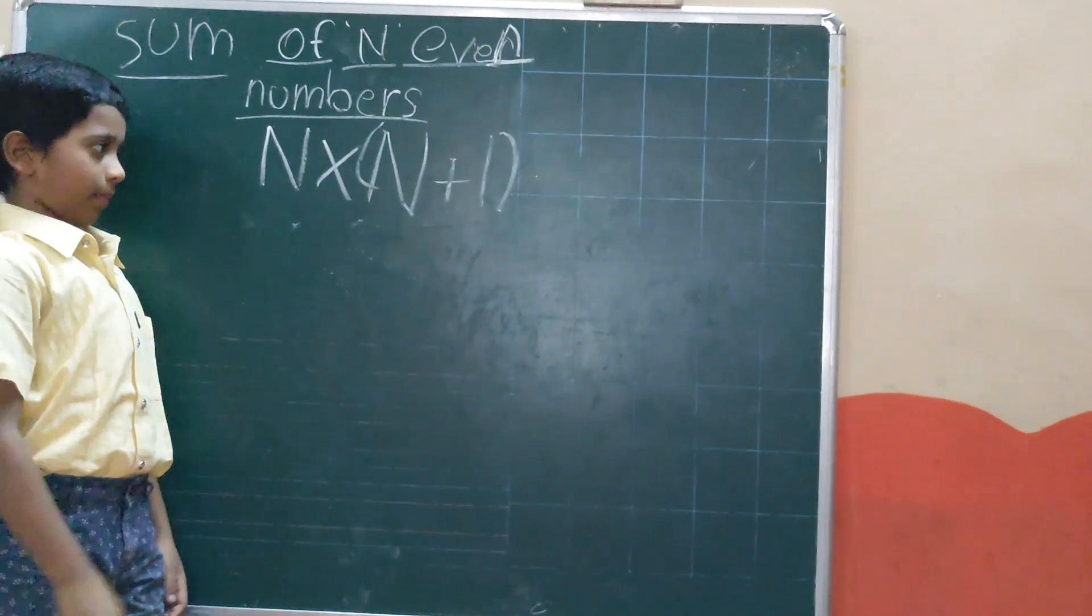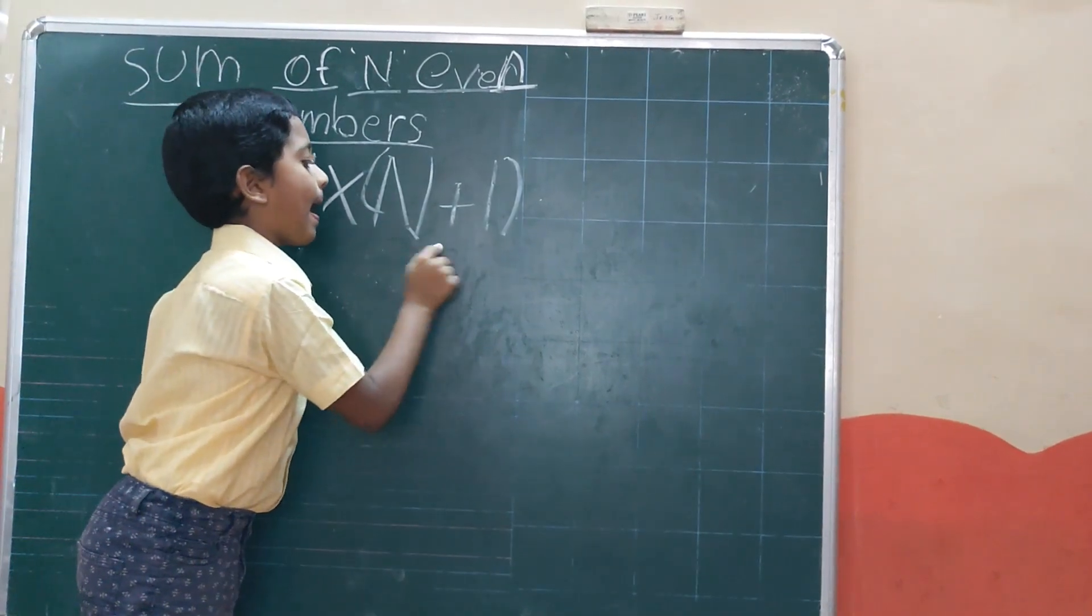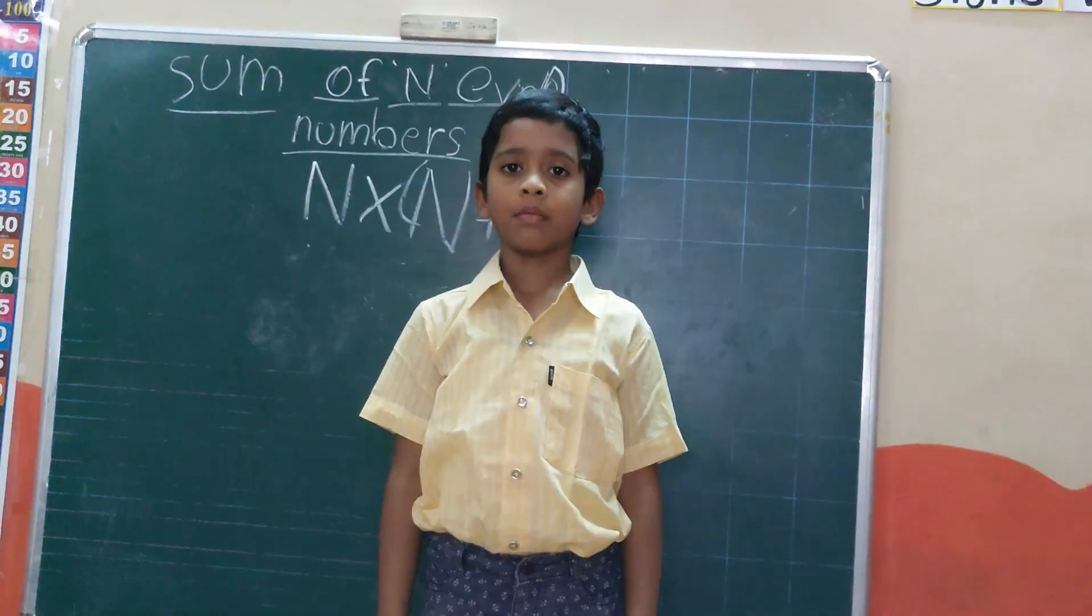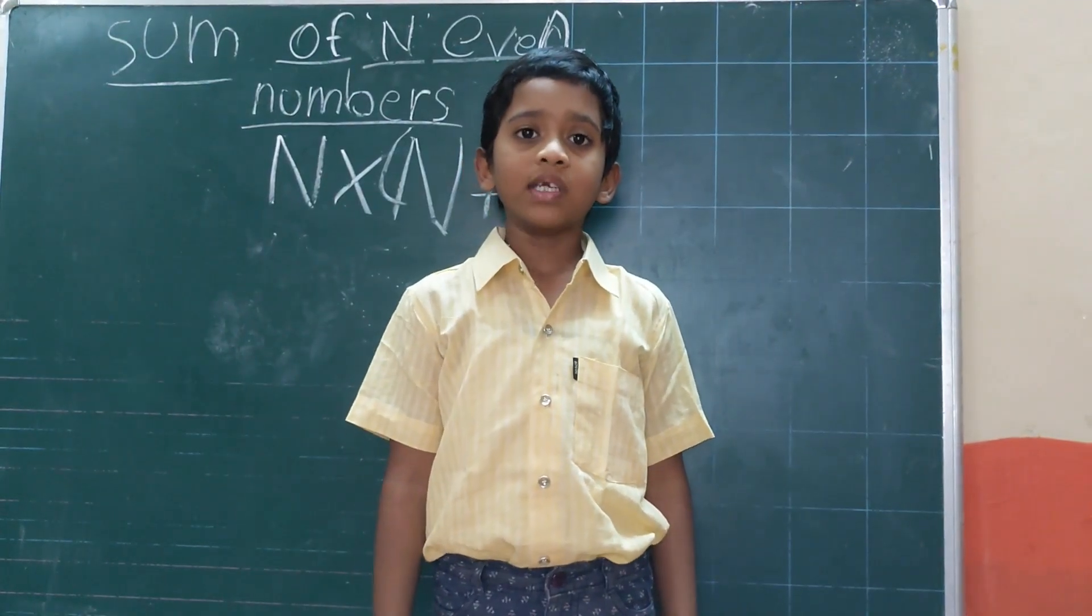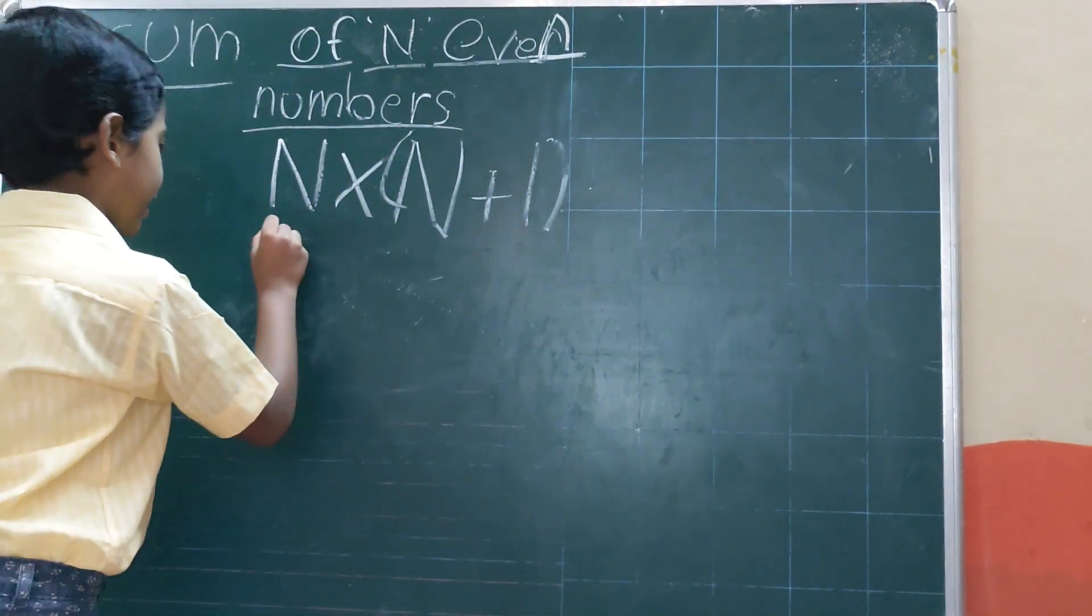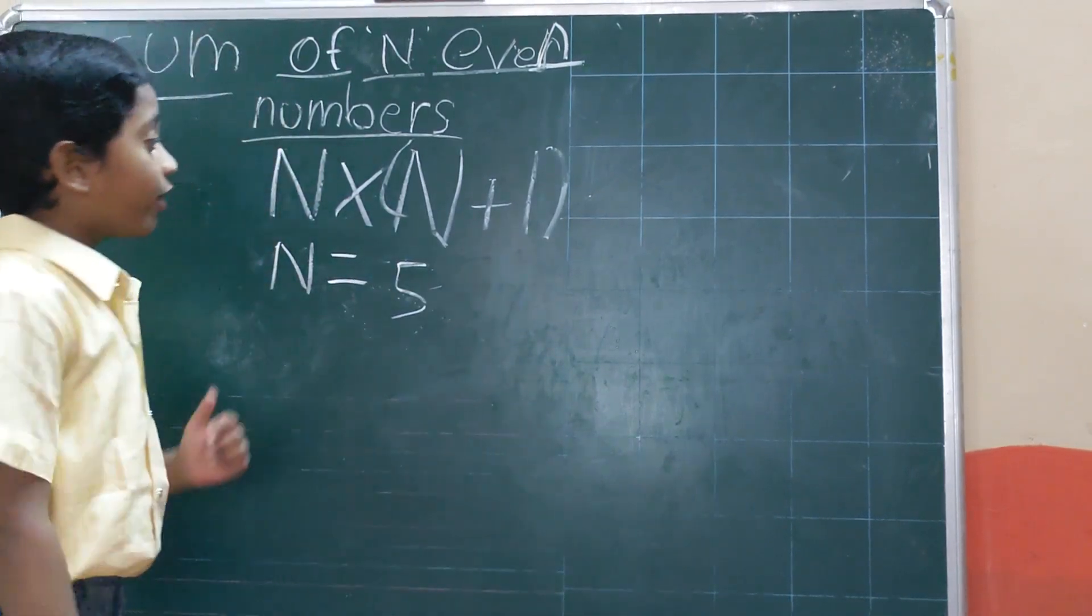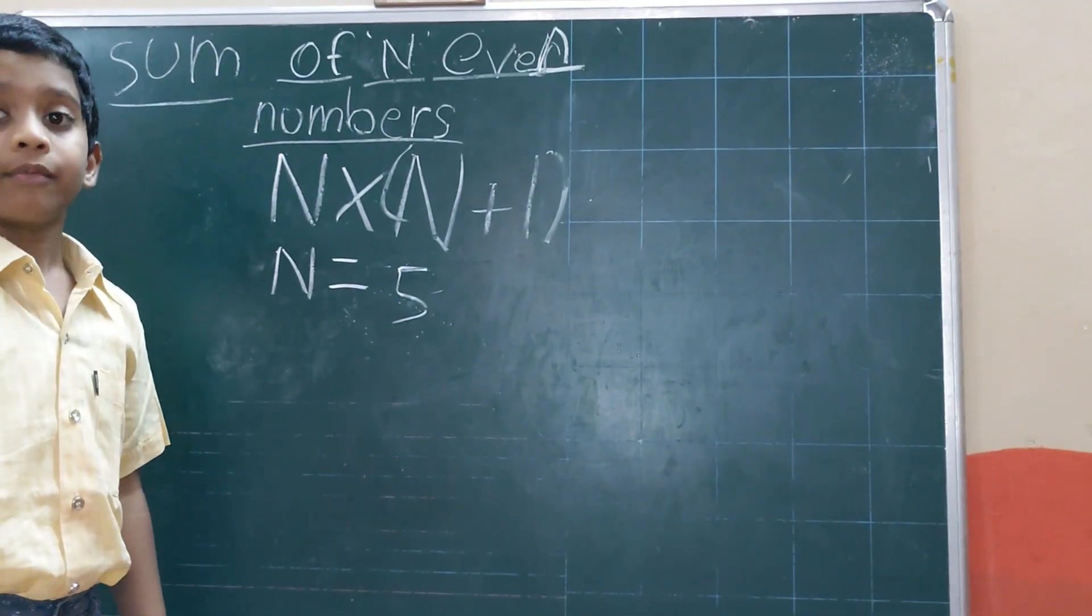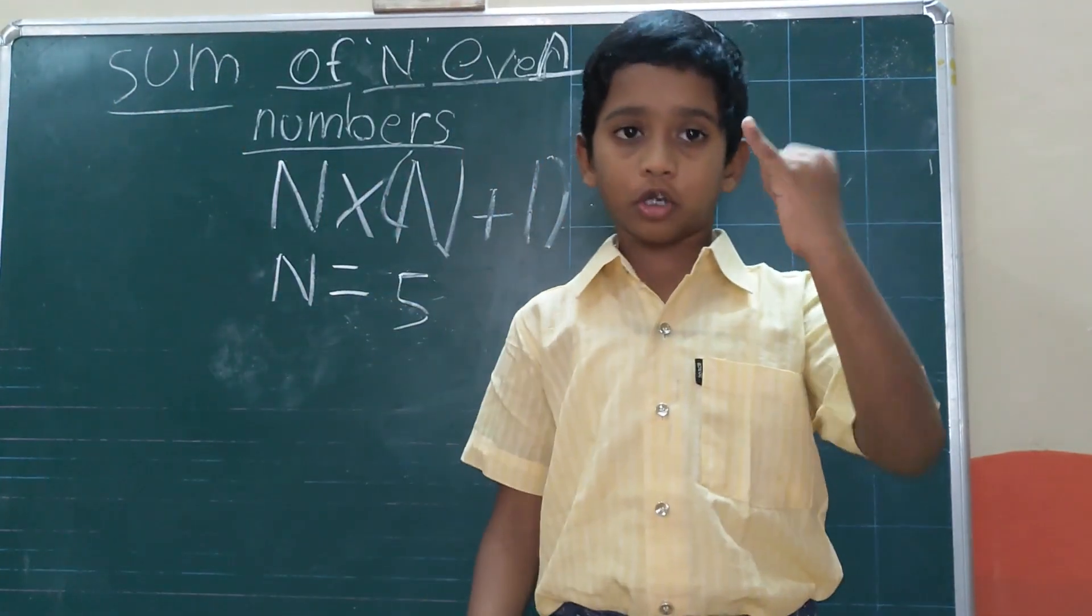This formula is sum of n even numbers. Now we will see the first example. Summation of even numbers 1 to 10. Here n is equal to 5. You will think how, why is this? It means how many even numbers are there?